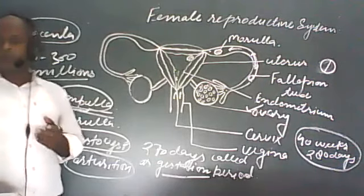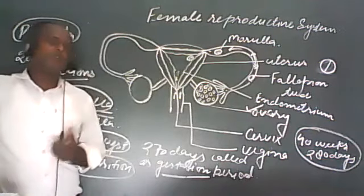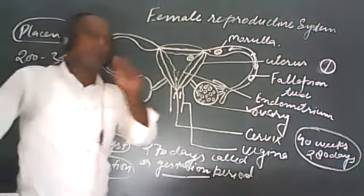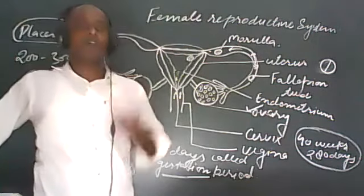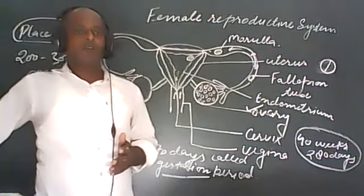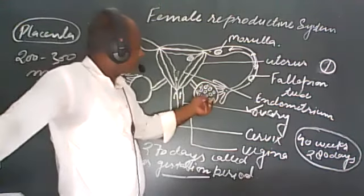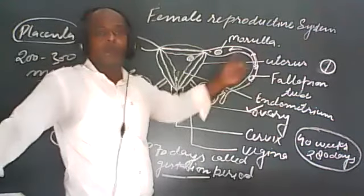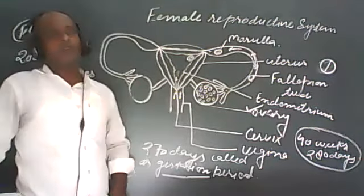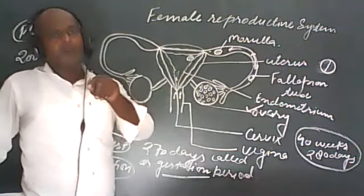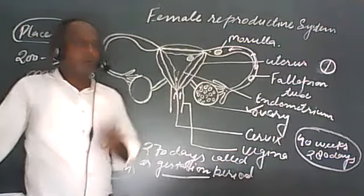When the egg is not fertilized, it will remain for only one day — 24 hours — and after that it will degenerate. When the egg is discharged from the ovary into the fallopian tube, it will remain for only 24 hours.